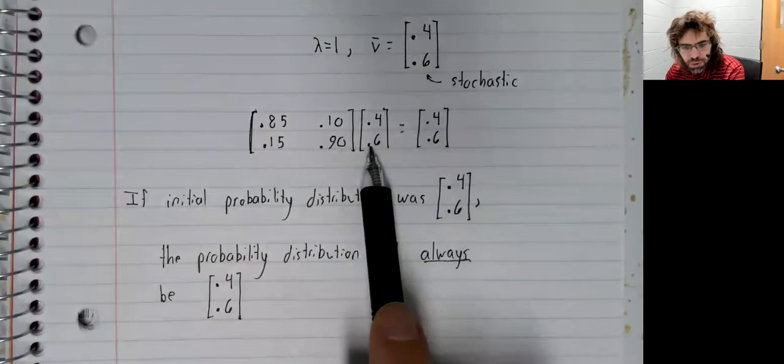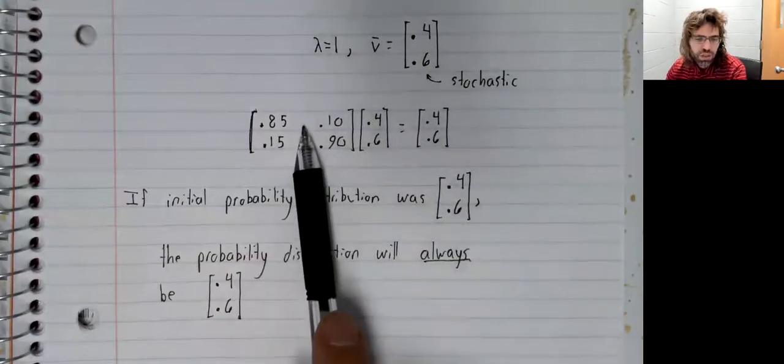We take this probability distribution, we hit it with the transition matrix.